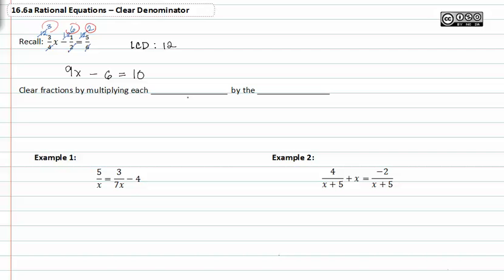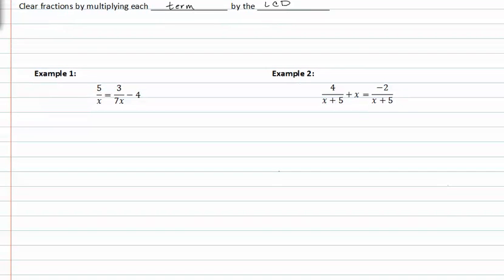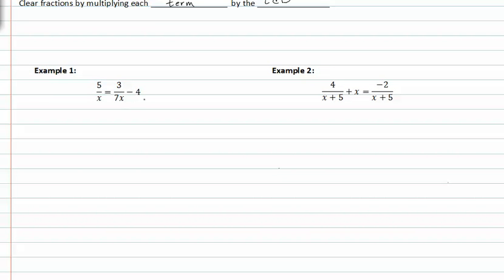Clearing fractions by multiplying each term by the LCD. In example one, our LCD is seven x.